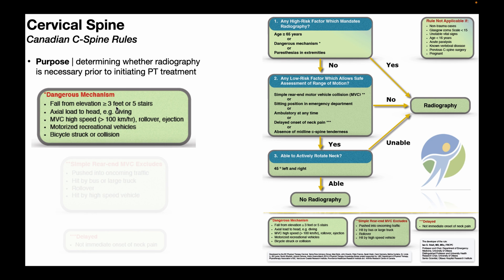Dangerous mechanisms include: a fall from an elevation of at least three feet or five stairs; an axial load to the head, such as diving into a shallow pool or river; a motor vehicle collision at high speed greater than 100 kilometers per hour involving a rollover or ejection; motorized recreational vehicles; or a collision involving a bicycle. The third high-risk criterion is paresthesias in any of the four extremities, upper or lower. A yes to any of these three automatically requires radiography.